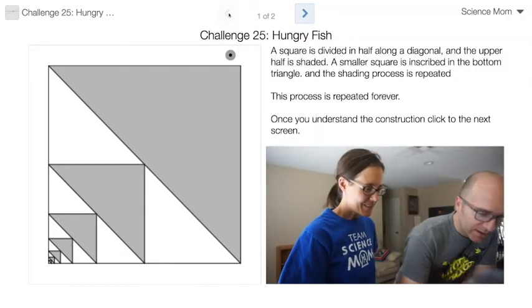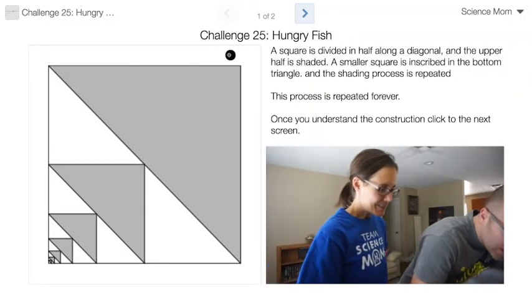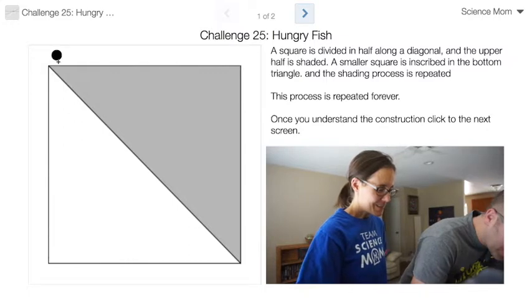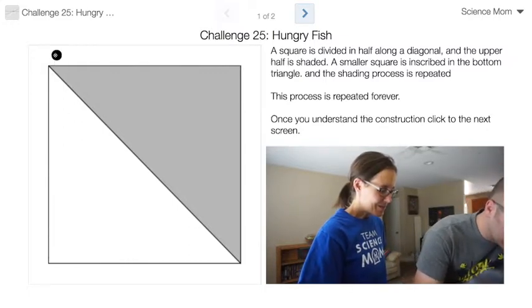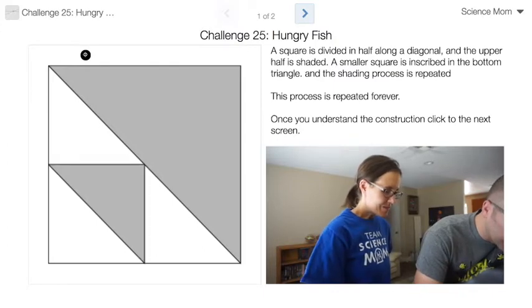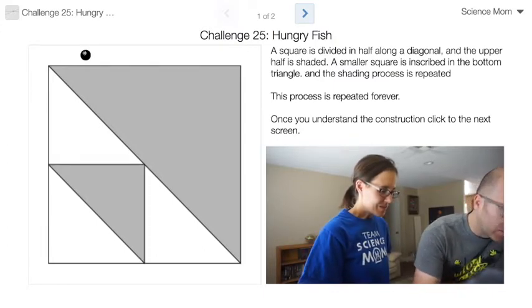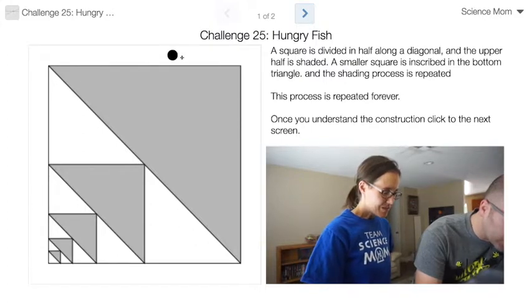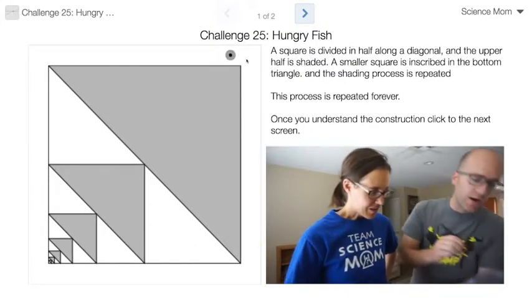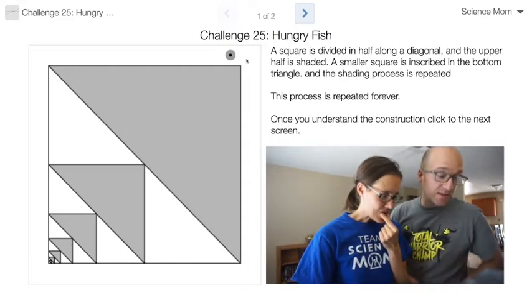In this challenge problem it's another geometric construction, your favorite, and the way it works is I take a square and shade the upper half and then the bottom left corner, another square, shade, and so on getting a sequence of triangles that are shaded. This process continues forever.